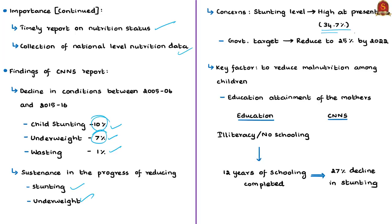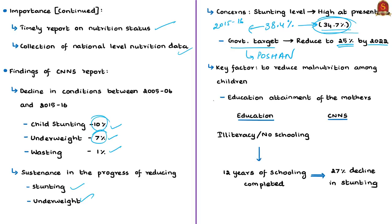The author insists it is time to focus on increasing the rate of decline of stunting, but mentions a key factor that has not received necessary attention — the educational attainment of mothers. According to the author, if mothers are well educated, conditions like stunting will reduce. The CNNS survey shows that stunting among children under 4 years came down from 46% to 19% when maternal education went up from illiteracy or no schooling to 12 years of schooling completed — a 27 percentage point decline. The author also notes a significant gap between the poorest and richest groups in maternal education, and suggests that increasing educational attainment of women among the poorest sections of society is certainly feasible.